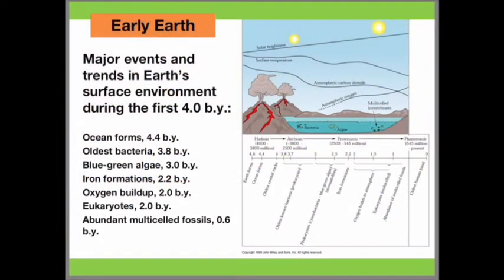Now that we have already discussed the methods that scientists use to piece together the origin of life, let's travel back in time to the origin of the Earth. This figure shows some major events and trends in Earth's surface environment during the first 4 billion years — the Hadean Eon — which represents the time before a reliable record of life was made through fossils. Earth formed approximately between 4.6 and 4.5 billion years ago, along with the rest of the solar system.